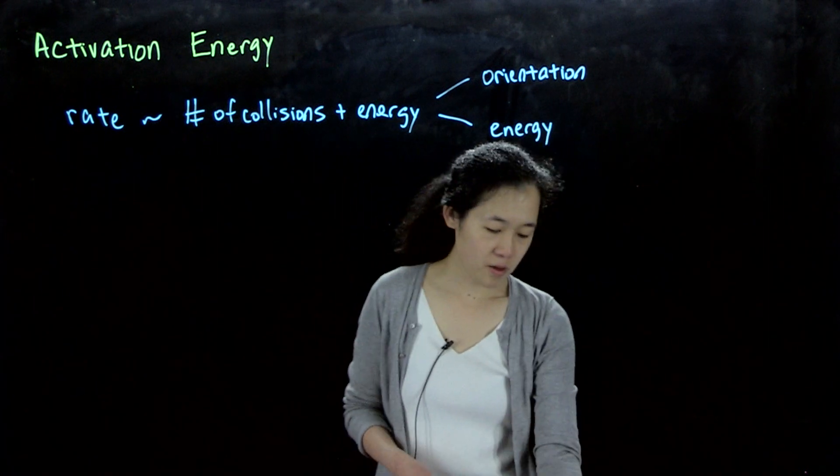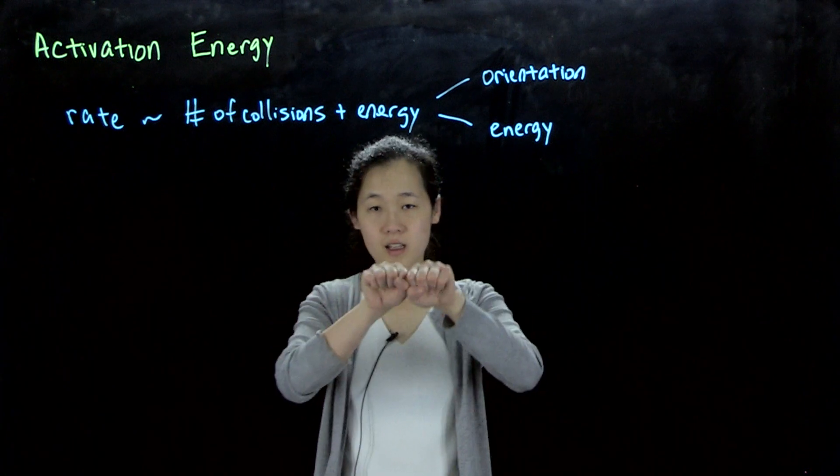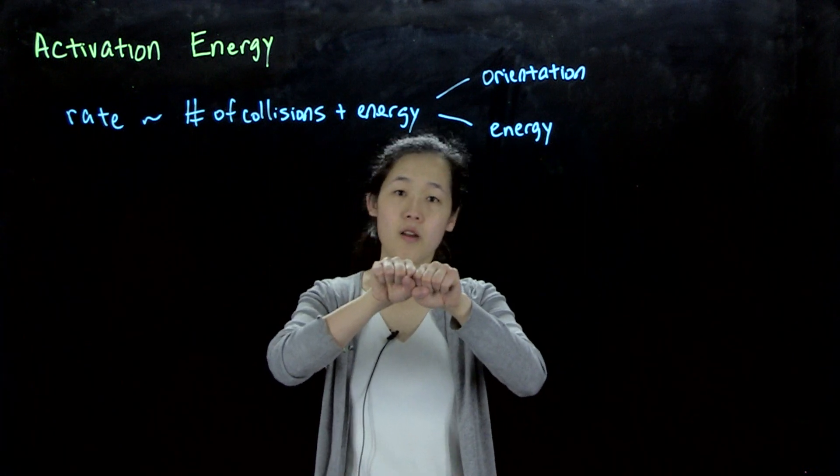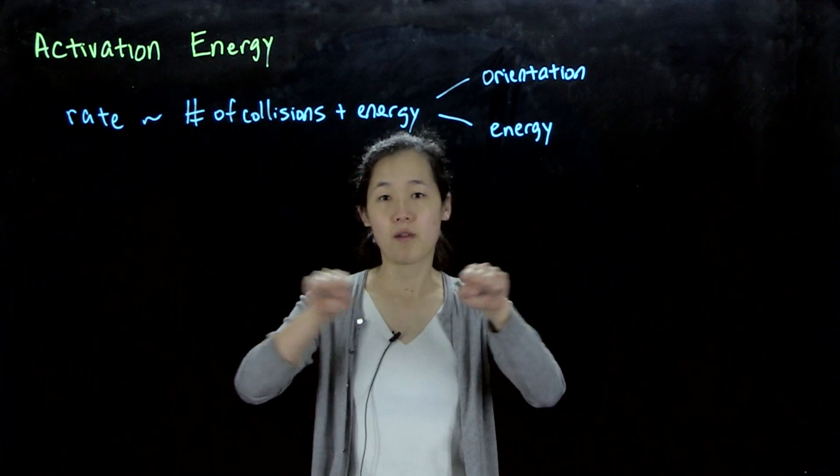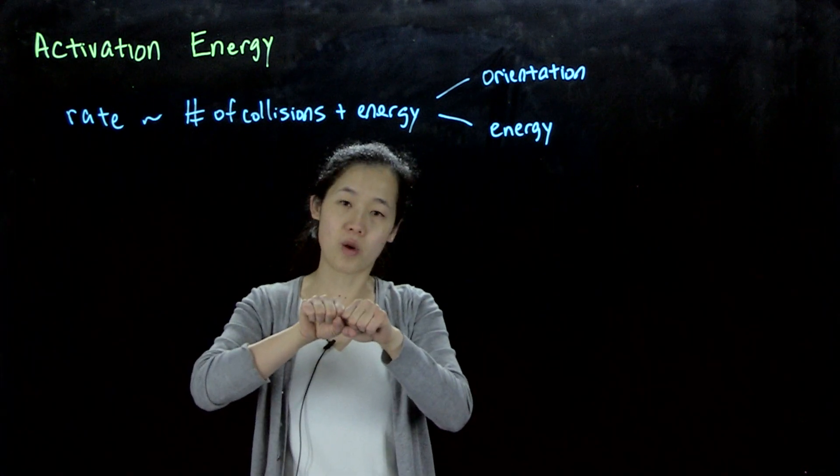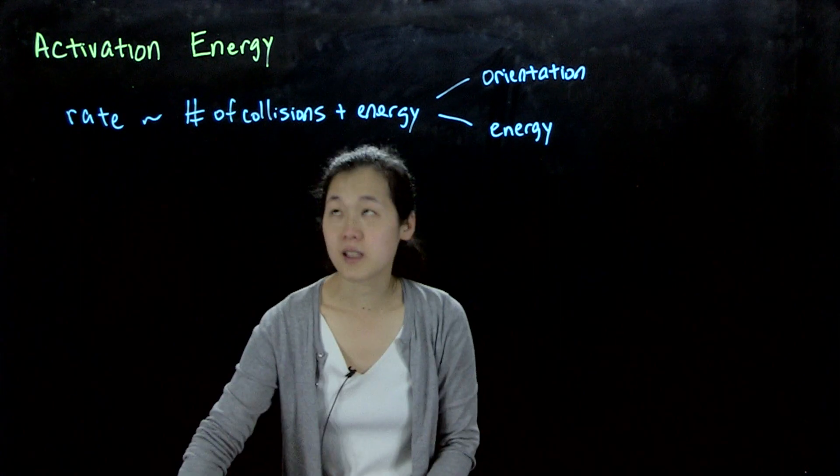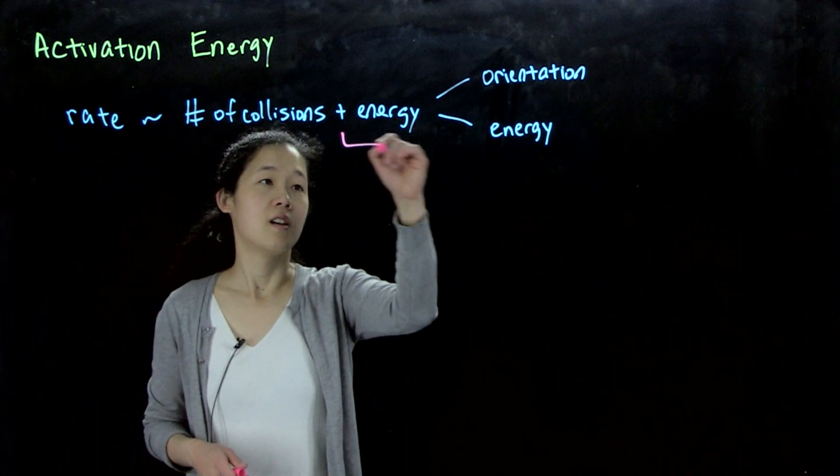So if you imagine having two molecules, let's say my two hands are the molecules, if you have to react them end-on-end, that's the right orientation, but they might also have to have the right energy. If they're going very slowly, maybe they won't have the energy to break or form the bonds that you want. So whether they're going fast enough, this is going to be telling us about temperature.